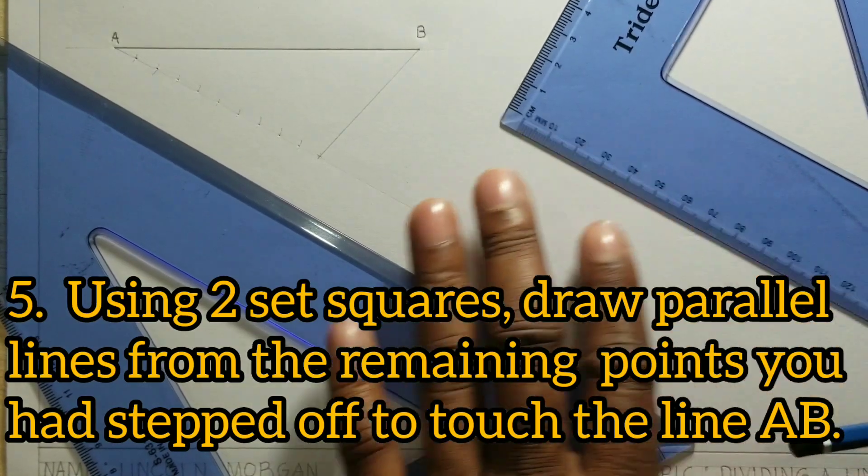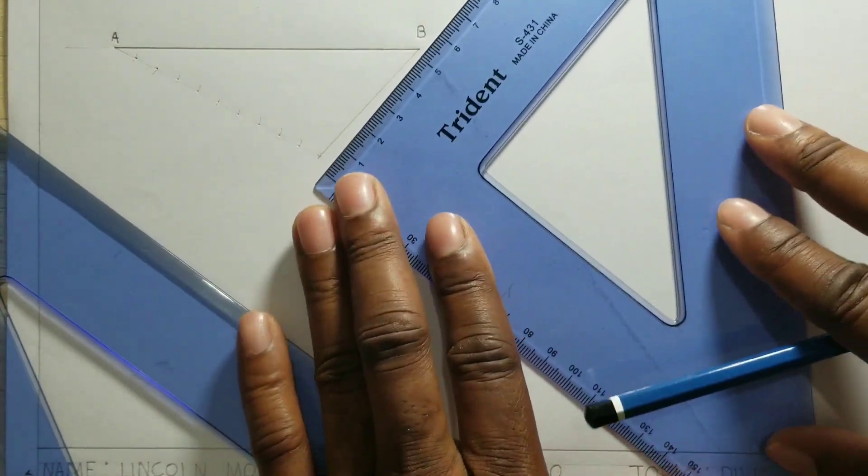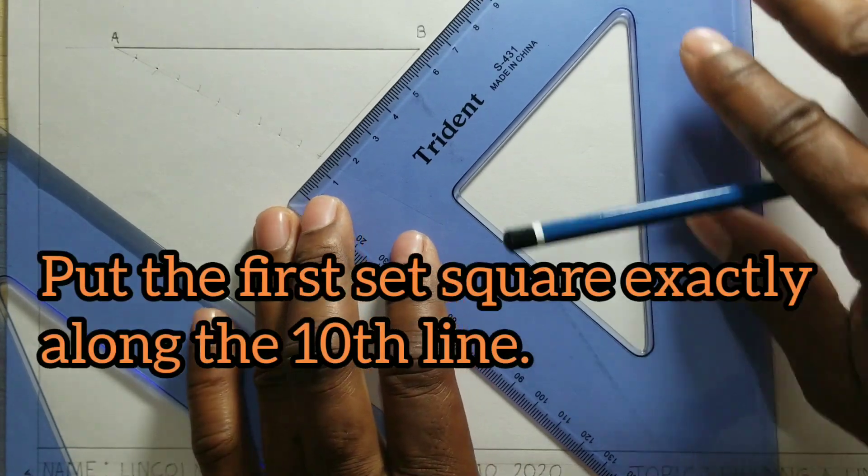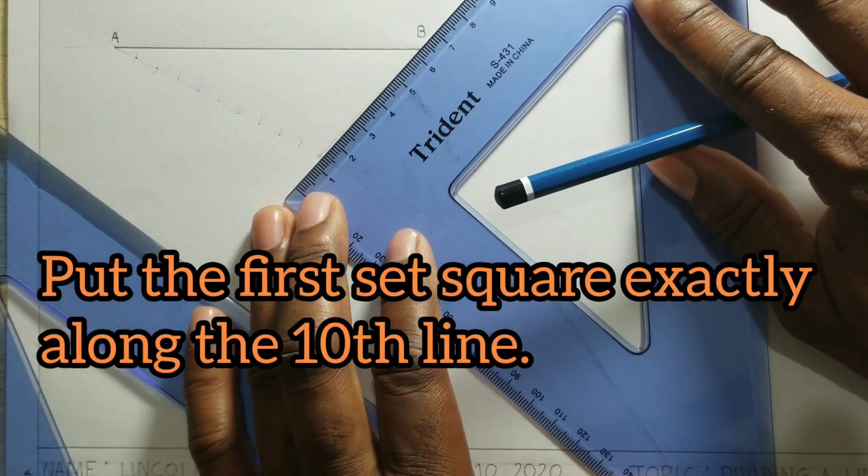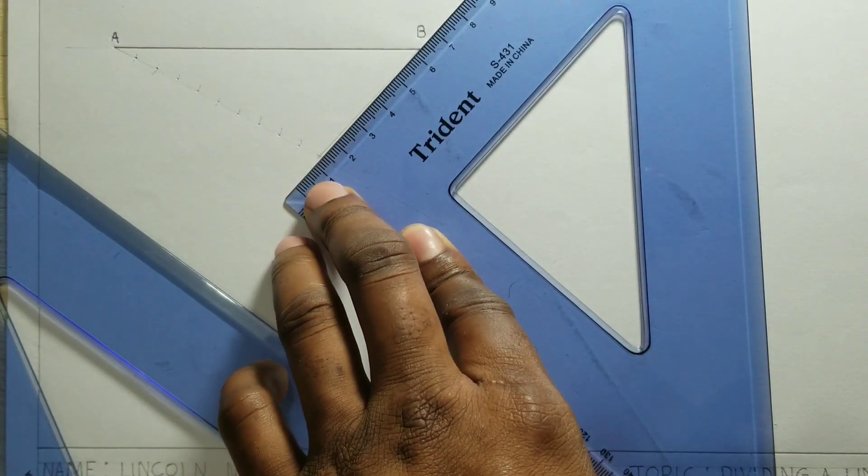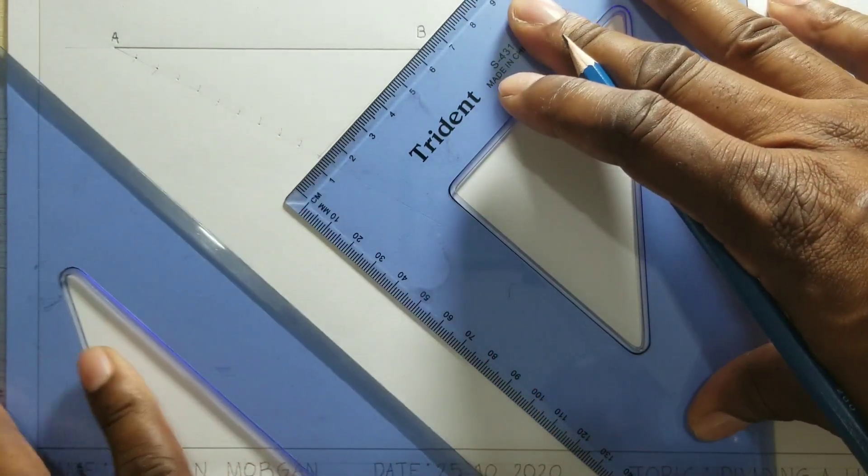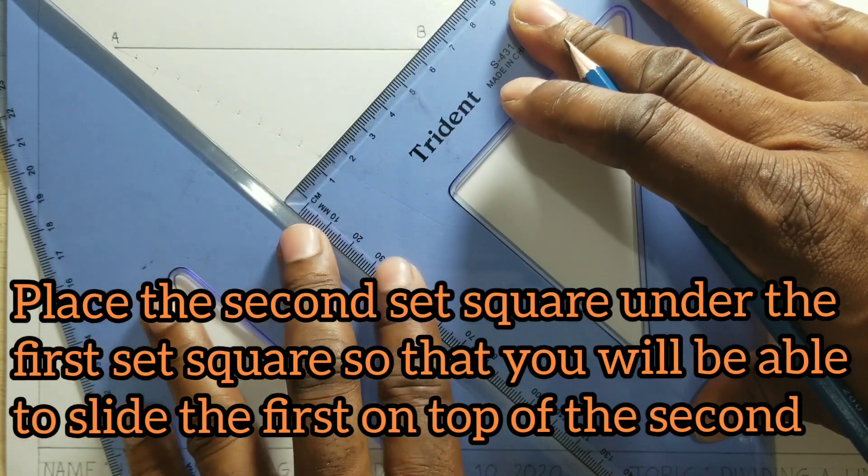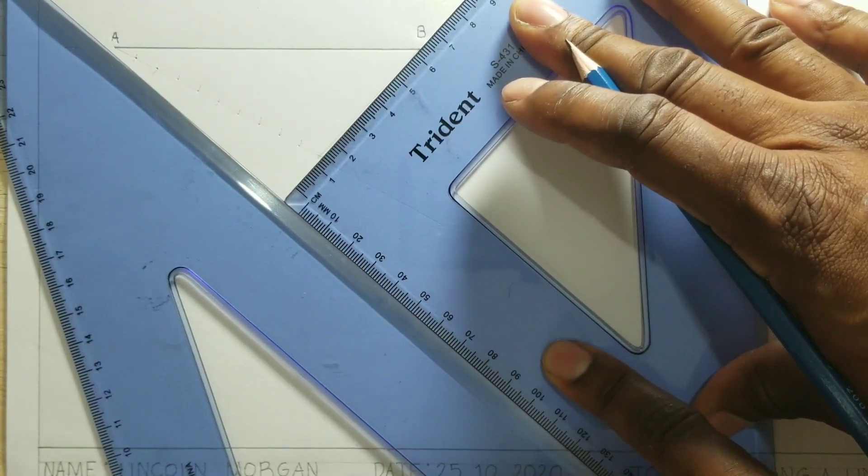Now what we will do is that we will put one set square along our line, which is our 10th line. Now once we have done that, what we will do next is to put the other set square under this first set square.